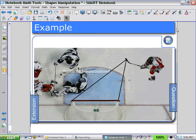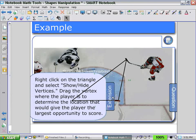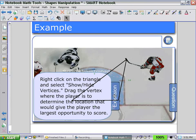An extension to that question. Here we have right click on the triangle and select show and hide vertices. Drag the vertex where the player is to determine the location that would give the player the largest opportunity to score.